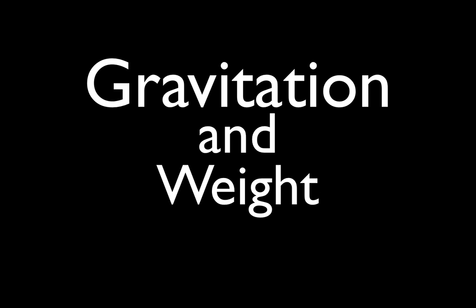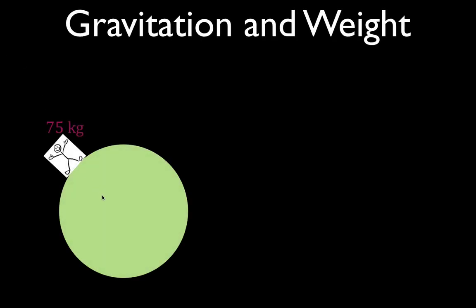In today's video, I'm going to show you two different ways to calculate your weight on Earth, or the force of gravitational attraction between you and the Earth. Here's you and here's the Earth, this big green thing. You have a mass of 75 kilograms.